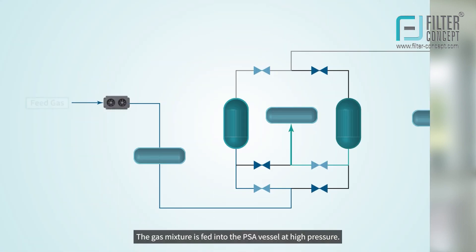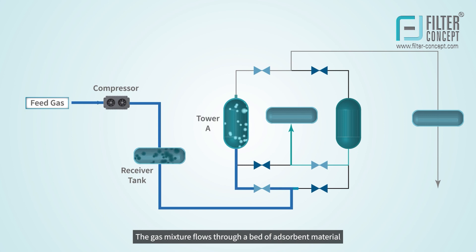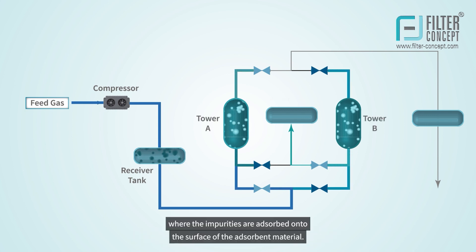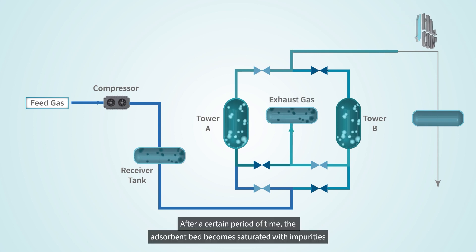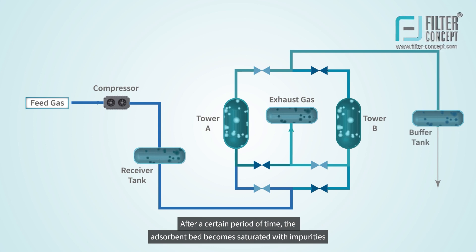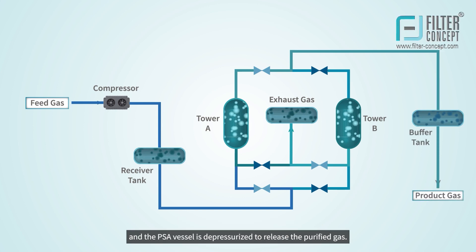The gas mixture is fed into the PSA vessel at high pressure. The gas mixture flows through a bed of adsorbent material, where the impurities are adsorbed onto the surface of the adsorbent material. After a certain period of time, the adsorbent bed becomes saturated with impurities, and the PSA vessel is depressurized to release the purified gas.